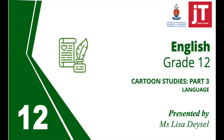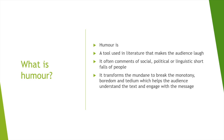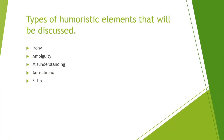Today we will focus on the different techniques that create humour. Firstly, we should ask ourselves: what is humour? It's a tool used in literature that makes the audience laugh. It's often commentary on social, political or linguistic shortfalls of people. It transforms the mundane to break the monotony of boredom and tedium, which helps the audience understand the text and engage with the message. These are the types of humoristic elements that will be discussed: irony, ambiguity, misunderstanding, anticlimax, and satire.